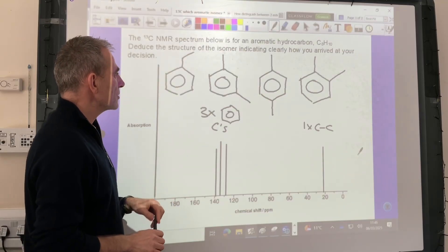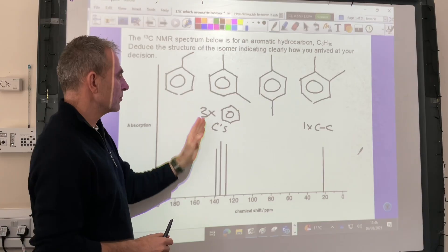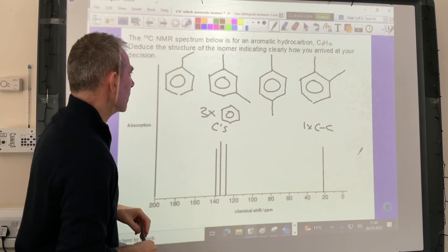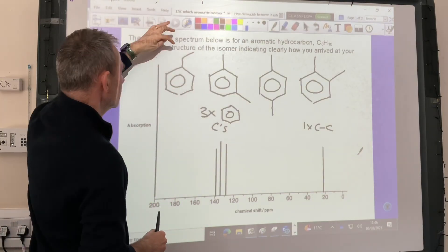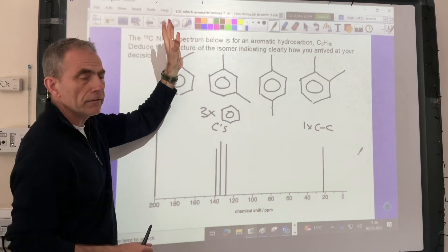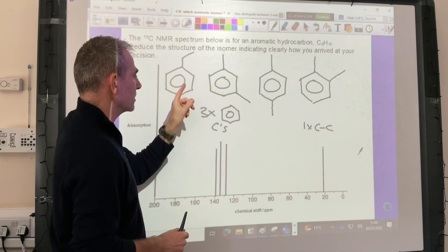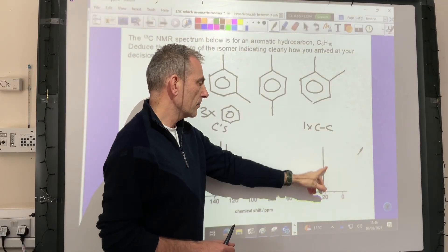All we're going to do now is go through each one and see if it would give this spectrum. Moving on to the first one, you can see there are two carbons in different environments in this C to C environment. So this can't be the right answer because that would have had two signals down here.